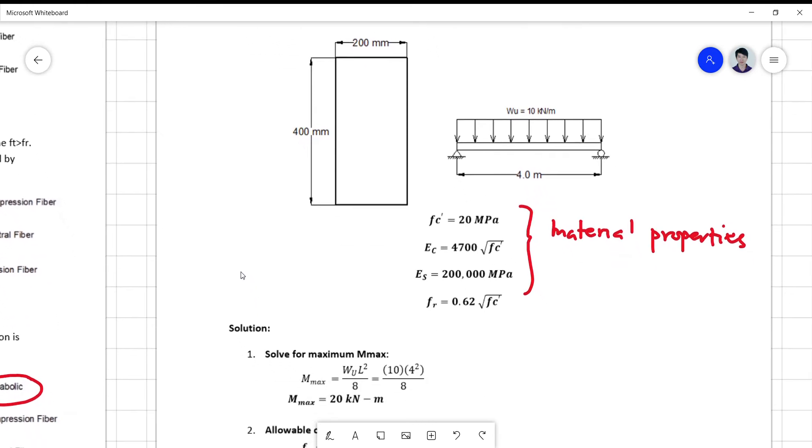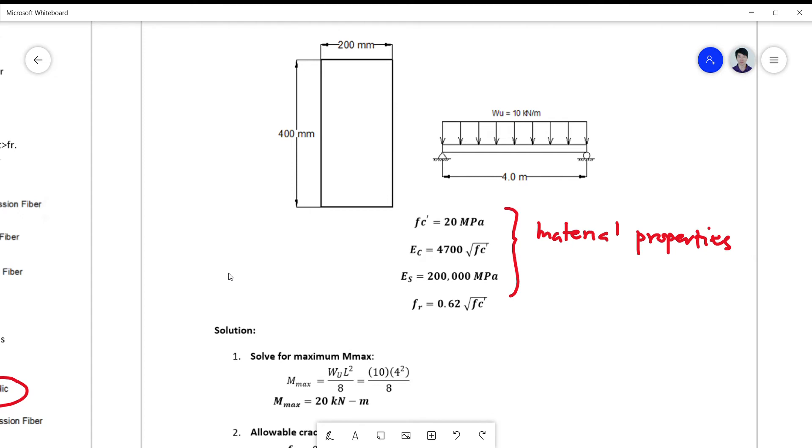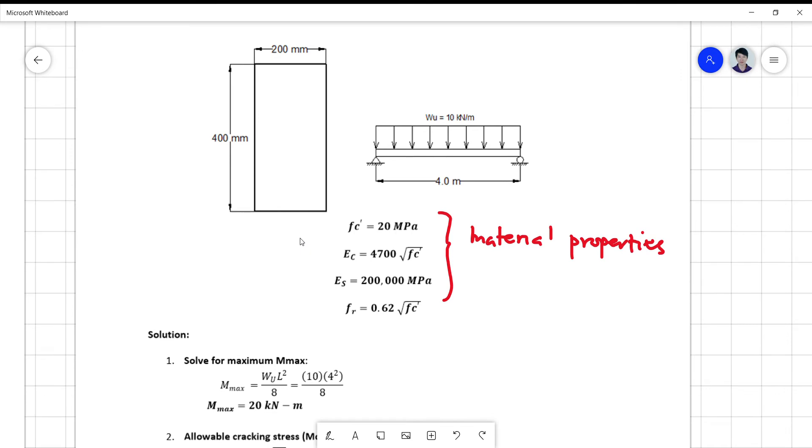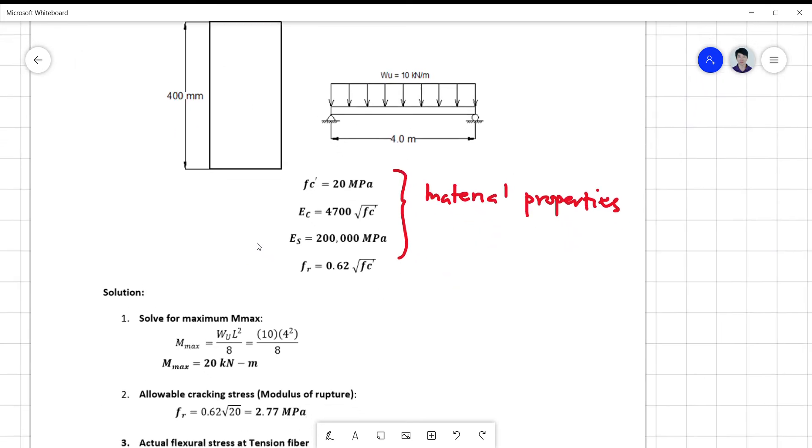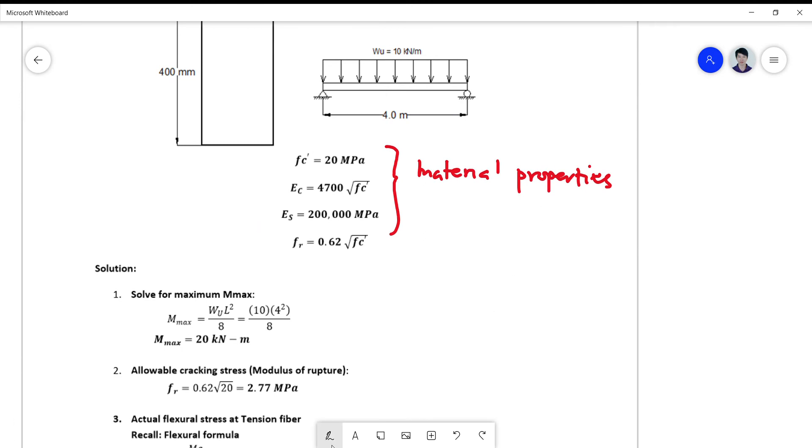So the first step is to solve for the maximum moment of the beam. The maximum moment can be directly solved by using a formula or you can solve it using the shear and moment diagram. If I have here the beam, since this beam is only simply supported, I have a 10 kilonewton per meter load, 4 meter span, I can readily solve for the reactions. Due to symmetry...